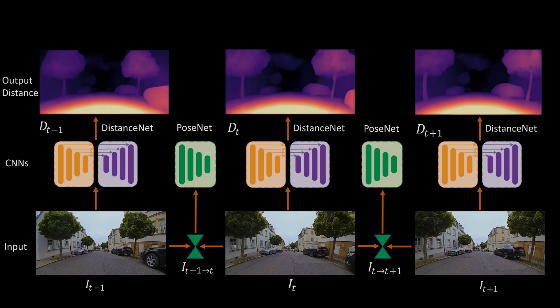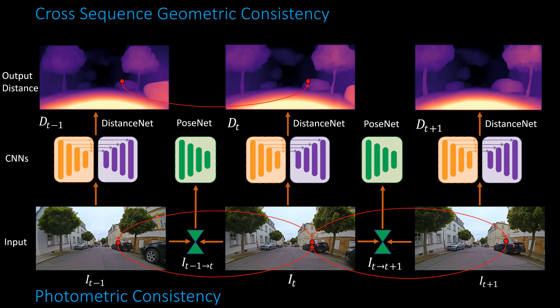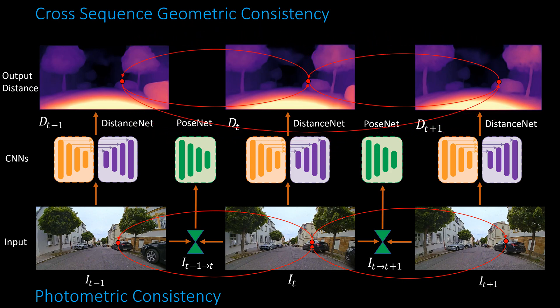Coming to the losses, we introduce a photometric error warped for both forward and backward sequences. More constraints are enforced by adding a cross-sequence consistency loss. The induced bundle adjustment framework due to this loss jointly optimizes the camera poses within a sequence by increasing the baseline and also provides additional constraints during training.